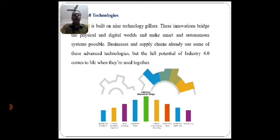There are nine technology pillars in Industry 4.0. These innovations bridge the physical and digital worlds and make smart and autonomous systems possible. Businesses and supply chains already use some of these advanced technologies, but the full potential of Industry 4.0 comes to life when they are used together.